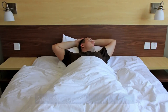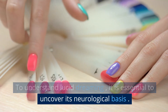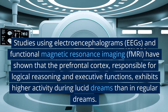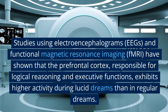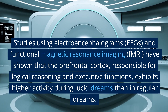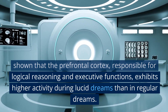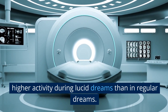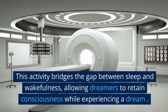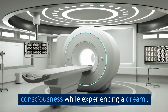Neuroscience of lucid dreaming: to understand lucid dreaming, it is essential to uncover its neurological basis. Studies using electroencephalograms (EEG) and functional magnetic resonance imaging (fMRI) have shown that the prefrontal cortex, responsible for logical reasoning and executive functions, exhibits higher activity during lucid dreams than in regular dreams. This activity bridges the gap between sleep and wakefulness, allowing dreamers to retain consciousness while experiencing a dream.